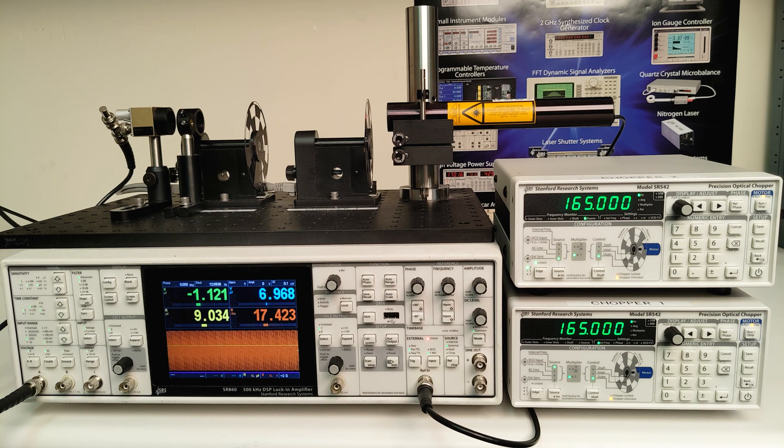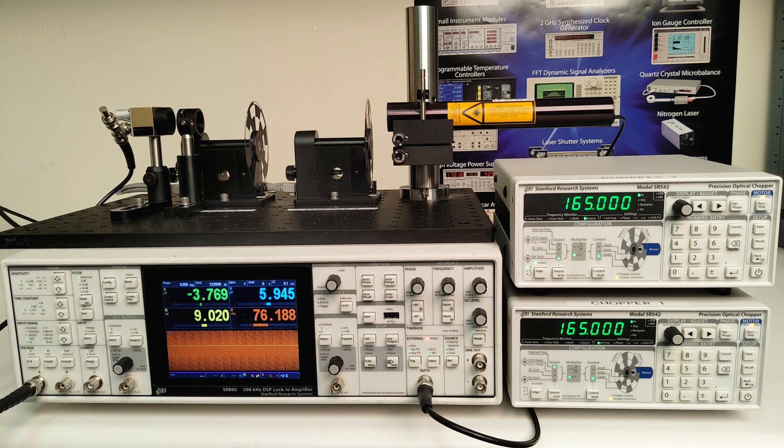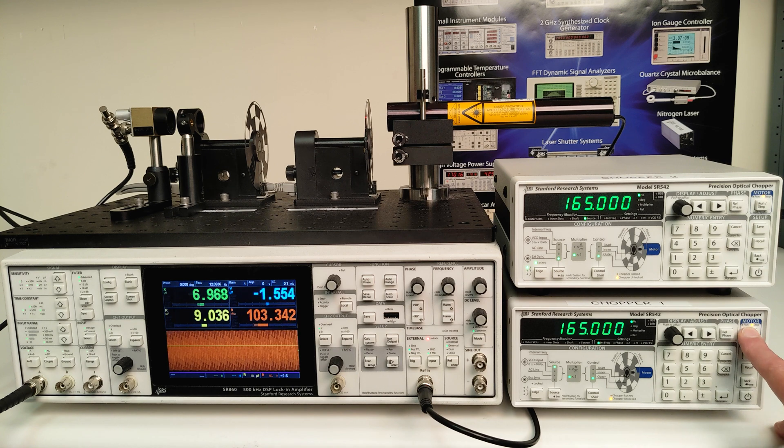The first step towards phase alignment of the choppers is establishing a baseline signal for the 50% duty cycle waveform of a singly chopped beam. This is done by measuring the photodiode output on the lock-in, with only chopper 1 running, and chopper 2 simply acting as a beam pass. I'll start chopper 1's motor.